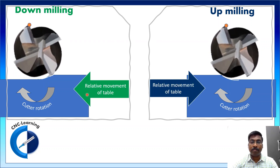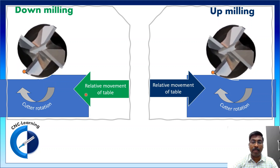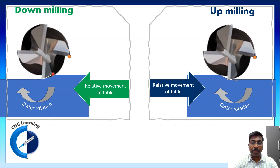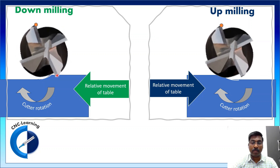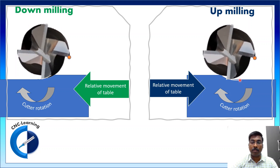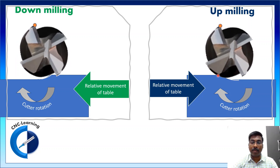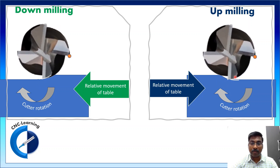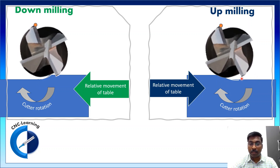A comparison of down milling and up milling: in down milling the chip thickness is high in the beginning and smaller at the end of the cut, whereas in up milling the chip thickness is smaller in the beginning and thicker at the end. In down milling, the cutter rotation and relative movement of the table are in the same direction, whereas in up milling they are in opposite directions.